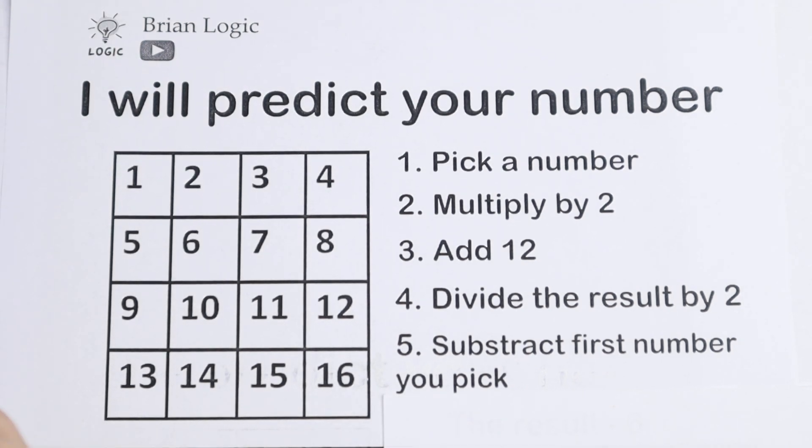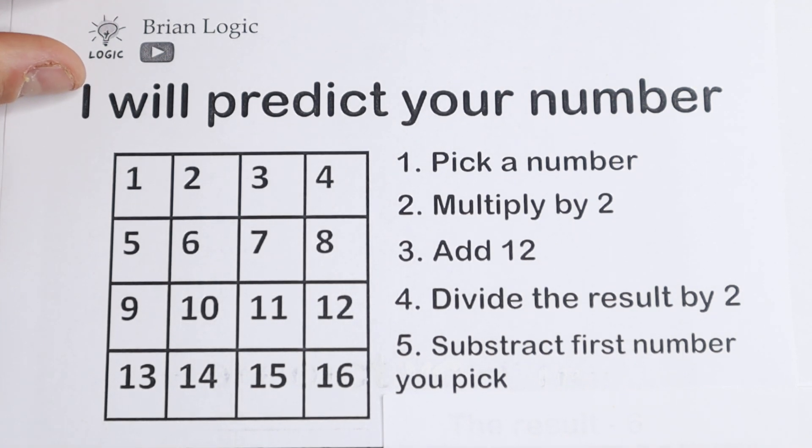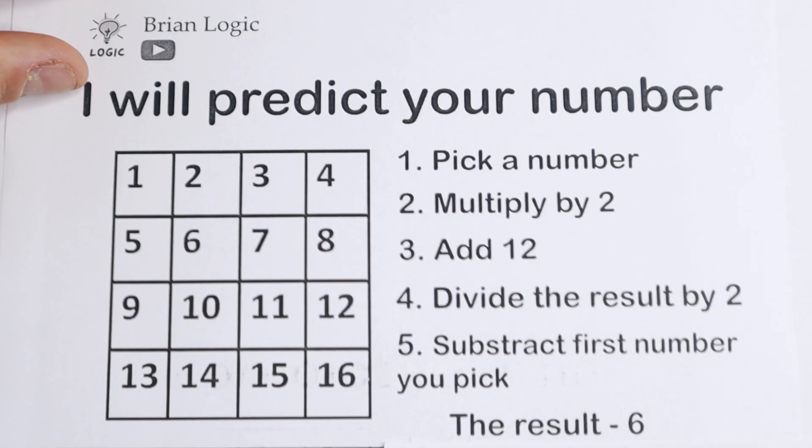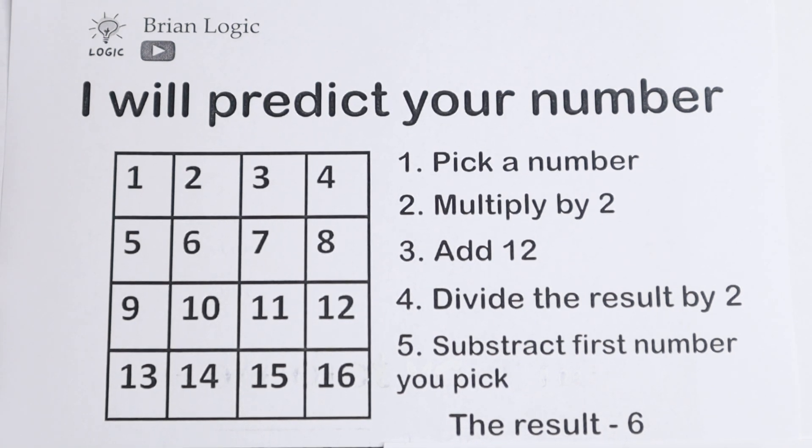So subtract this number from this division, after this division. And you have an answer, you have a number. And I hope you knew all the thing correctly, because your result is 6. And I hope this result is correct. And if maybe you made a mistake, so do the thing once more and the result will be 6.